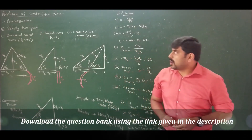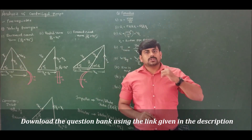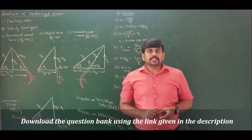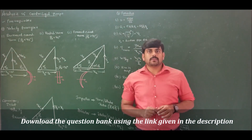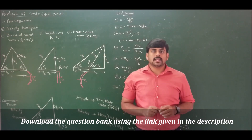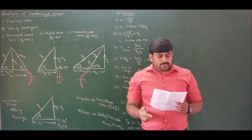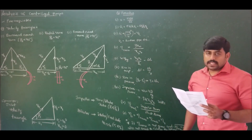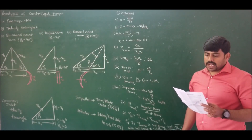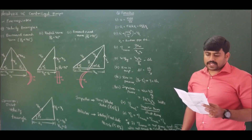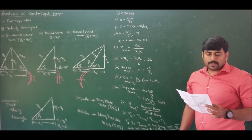Let us solve problem number 1. I am solving problems from the question bank attached via the link given below the video in the description. Kindly look at the description — there I have provided a link which will lead you to the question bank, and for that question bank I will be discussing solutions in this lecture series. Problem number 1 states: the outer diameter of a centrifugal pump is 50 cm and the inner diameter is 25 cm, running at 1000 rpm against a head of 40 m. Velocity of flow is constant and equal to 2.5 m/s. Vanes are set back at an angle of 40 degrees at the outlet. Width of the outlet is 5 cm. Find: vane angle at inlet, work done by the impeller, and manometric efficiency.